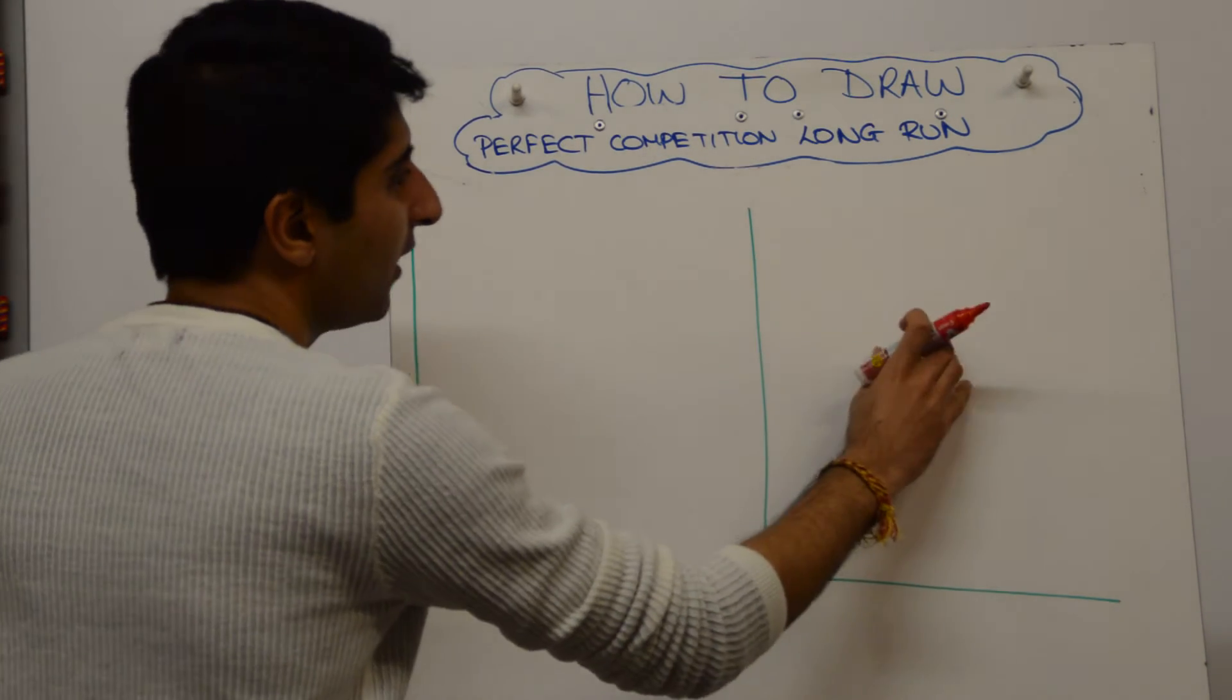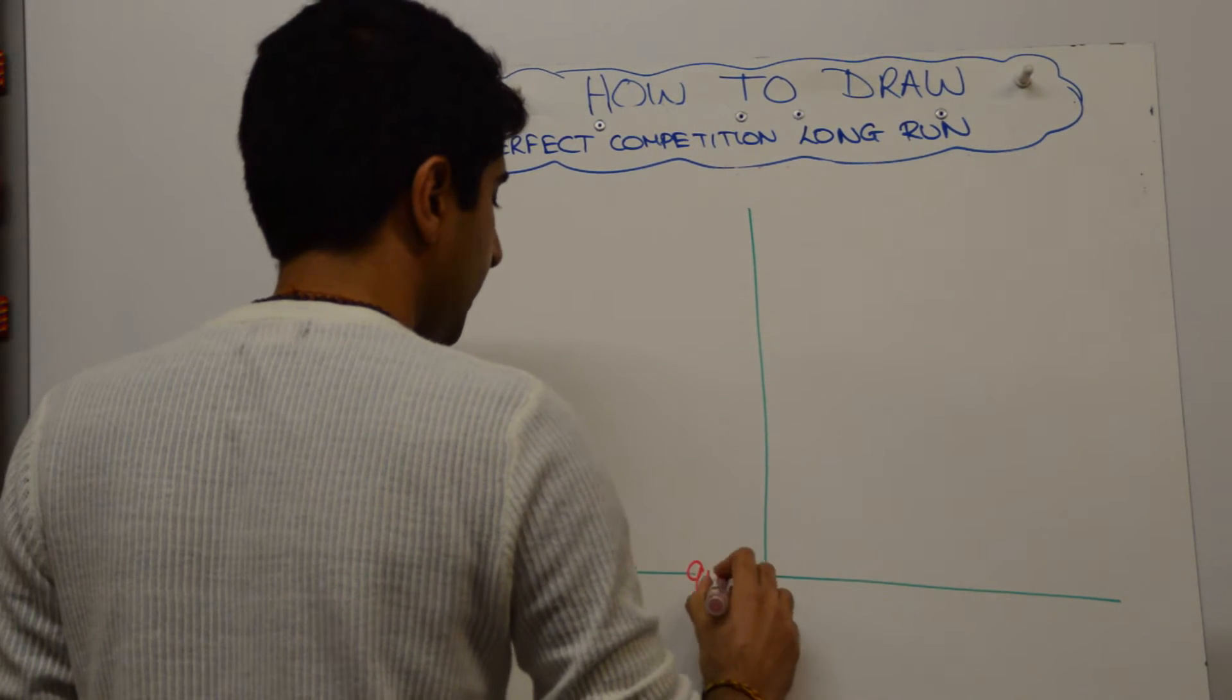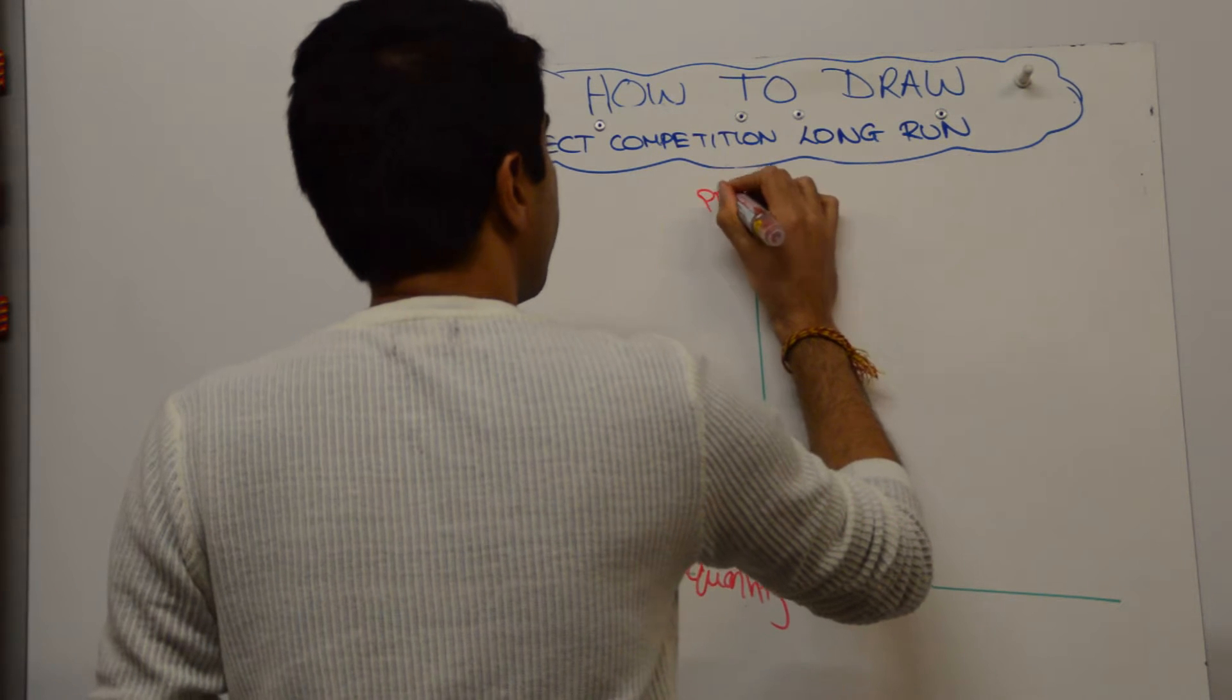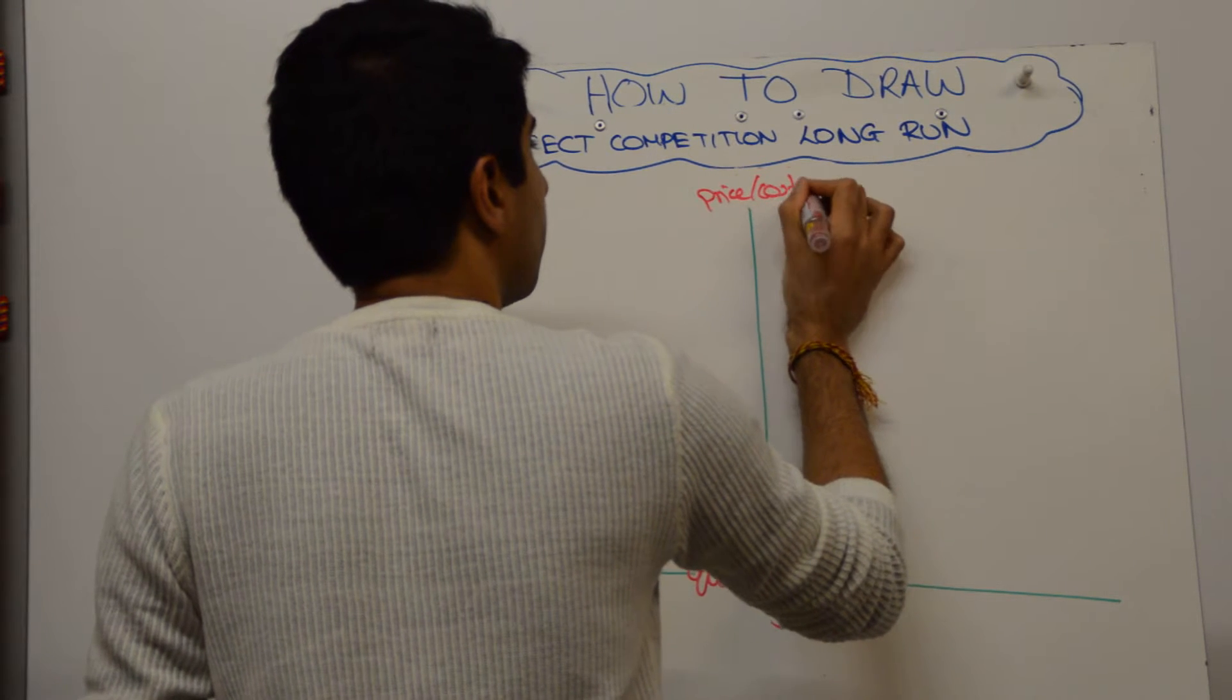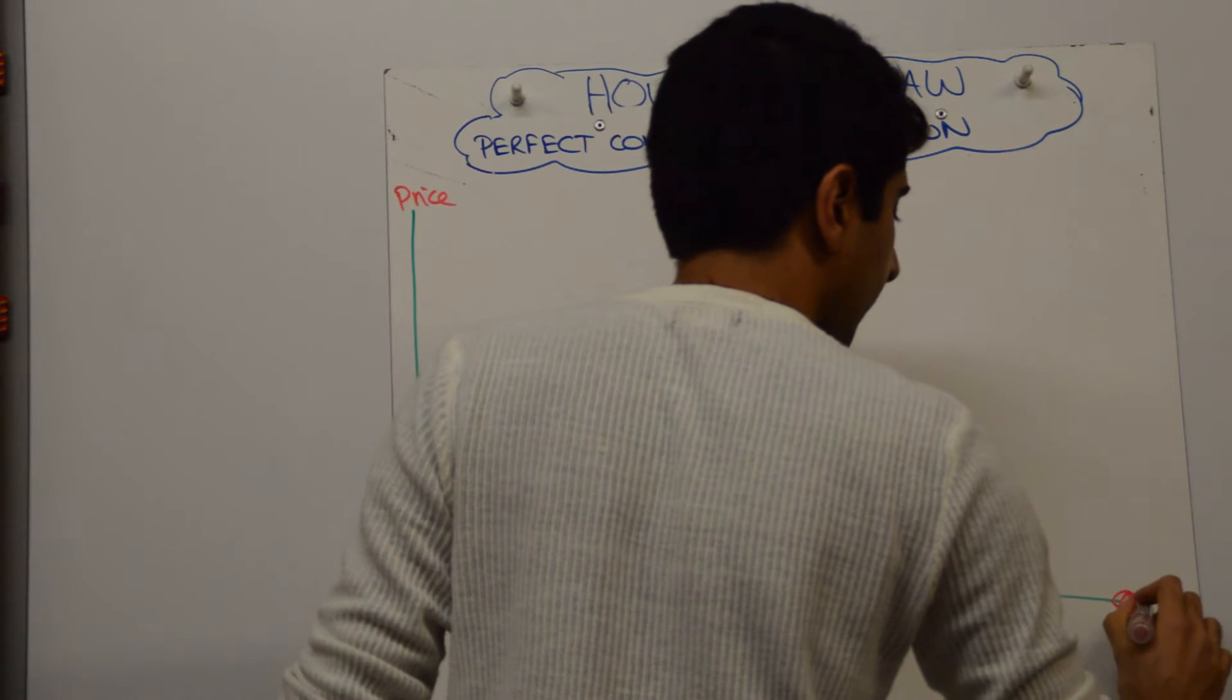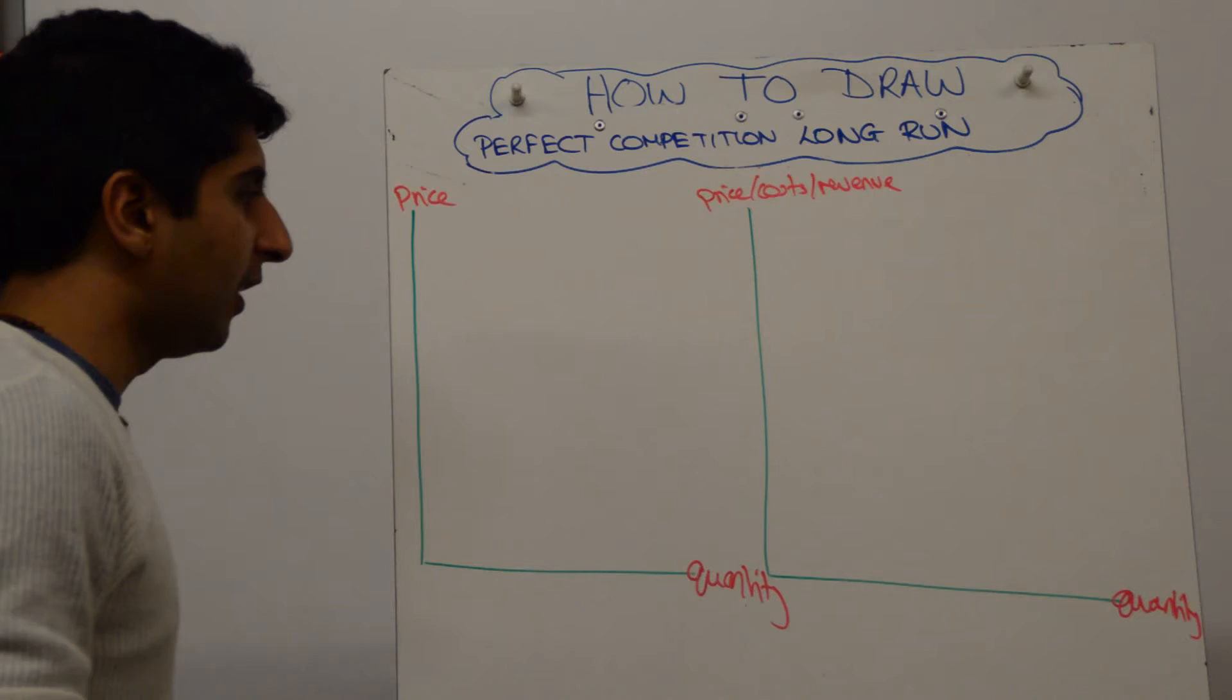So we've got market on the left, firm on the right. Let's just go to price and quantity. For the market and for the firm, it's price, costs and revenue. And it's quantity again down here. Okay, that's easy enough, lovely jubbly.